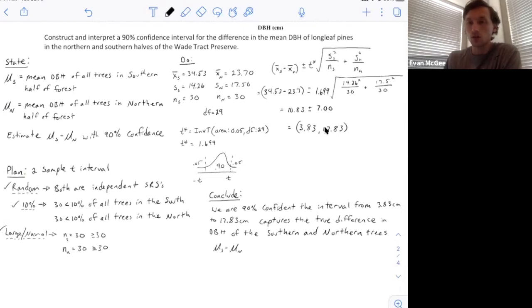If we get all positive values, that means the first value (south) is larger. If they were all negative, that would mean the trees in the north were larger because the second value would be larger. If they were negative and positive, we wouldn't have reason to believe that either is bigger because all values in the interval are plausible values for the difference.